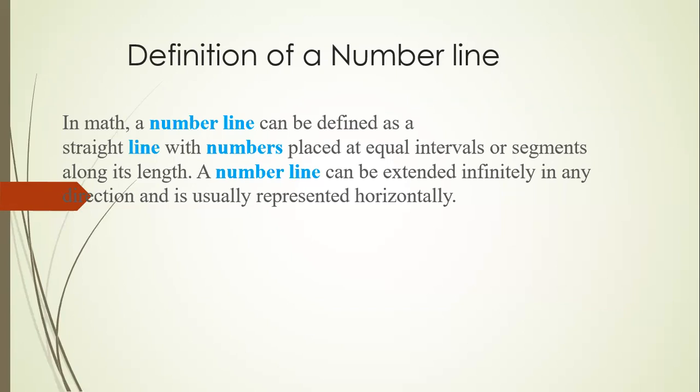A number line is basically a straight line, so let's draw the straight line. Now we have to write numbers on this line with equal intervals — meaning we have to break this line into equal parts, which are called intervals, and write numbers on them.